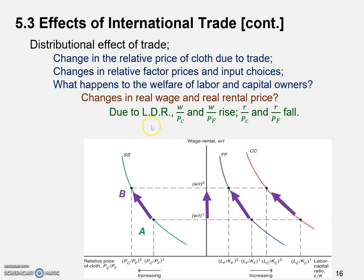When we use less labor, MPL would go up. So the real wage in terms of the price of cloth — W over Pc — and the real wage in terms of food would both rise. Because we use fewer units of labor, the remaining labor would be more productive because of diminishing returns. And when its productivity goes up, it should get a higher pay. So the real wage in terms of both food and cloth prices would both go up.